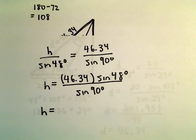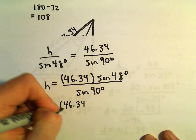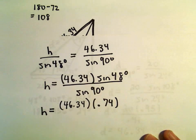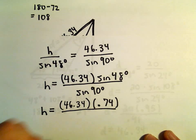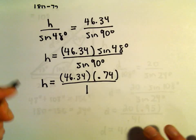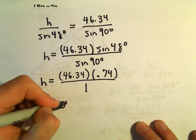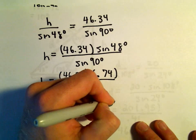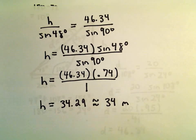Well, again, let's get a value here for sine of 48 degrees. So I'm getting sine of 48 degrees to be .74 after rounding. Well, sine of 90 degrees, we know that that's just equal to 1. So now all we have to do is take .74, multiply that by 46.34, and I am getting the value 34.29, or roughly equal to 34 meters tall. That would be the height of the pole.